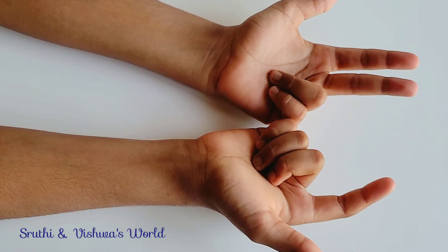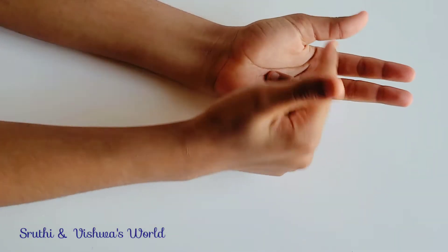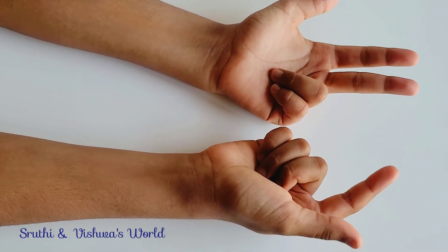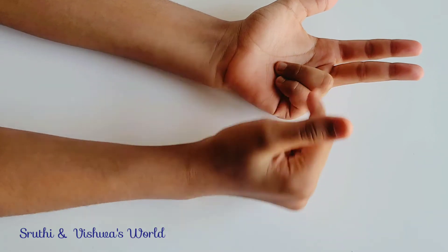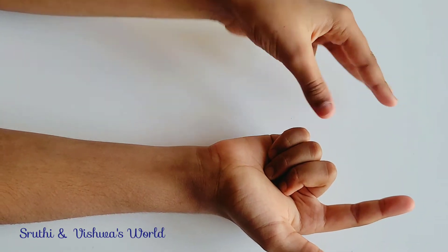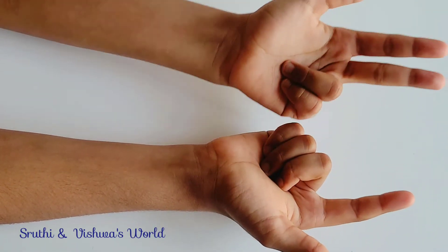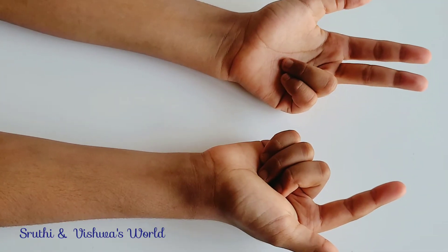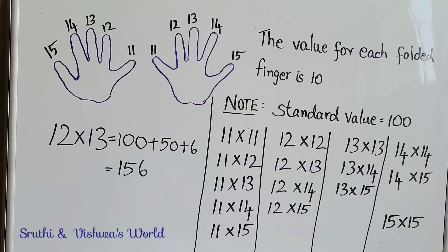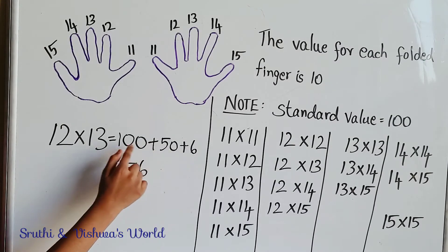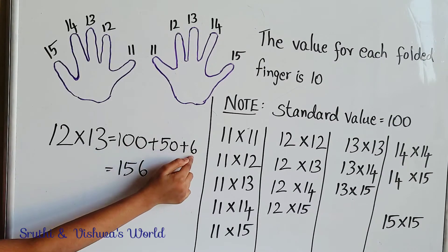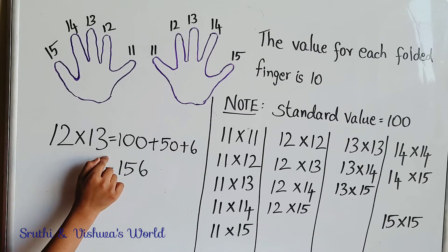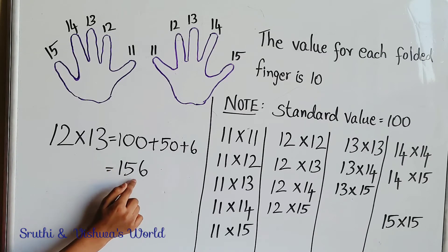In this method you don't have to worry about the unfolded fingers. The number of folded fingers on the left hand is 2 and on the right hand is 3. So we multiply 2 times 3 which gives us 6. So write plus 6. So 100 plus 50 plus 6 is 156. So 12 times 13 is 156.